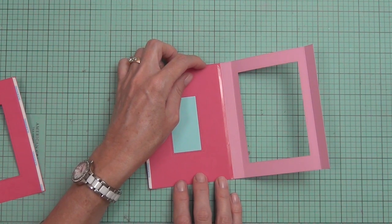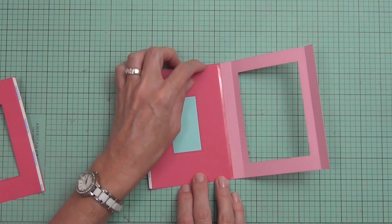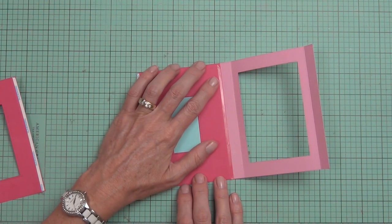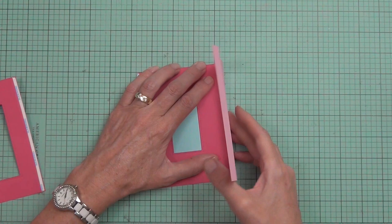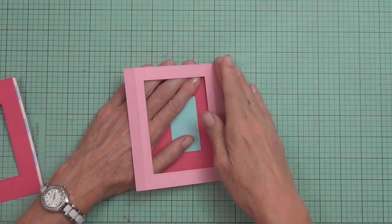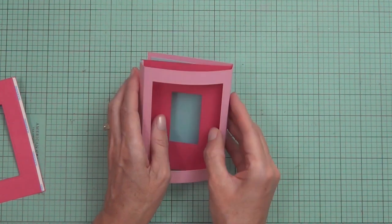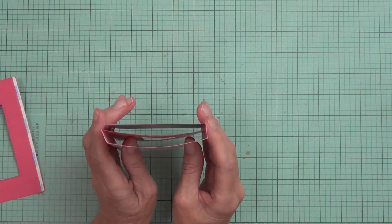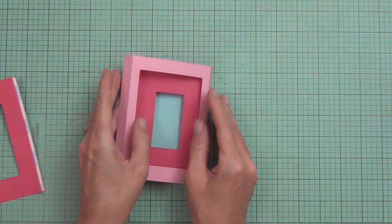You can use a liquid glue but you do have to be a little bit patient with that and I'm not, I can't be bothered waiting for it to dry. So I've added the score tape, removed it, and then lined it up with the crease, the first crease, and then folded the top of the card over.